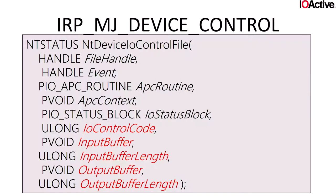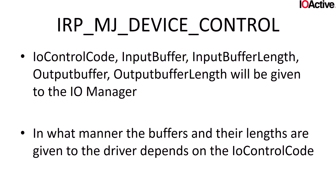All the specific data you need you grab out of your IRP stack. From user land, you call the NtDeviceIoControlFile system call. Looking at the last five arguments — which represent the attack surface entry into the driver — you have your control code, input buffer, input buffer length, output buffer, and output buffer length.